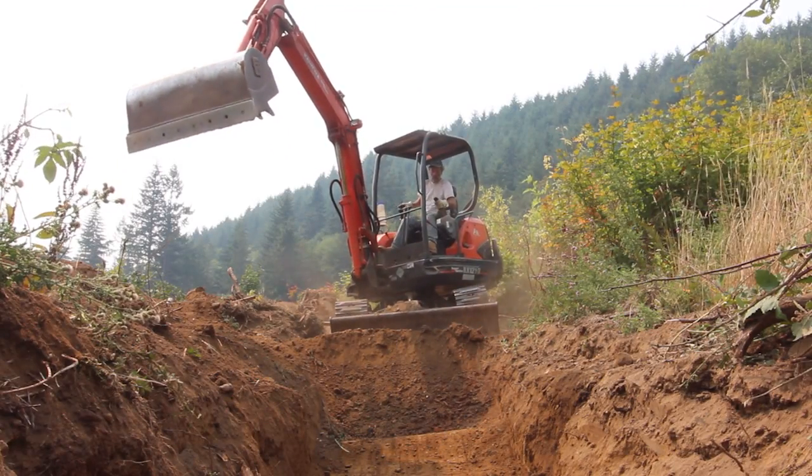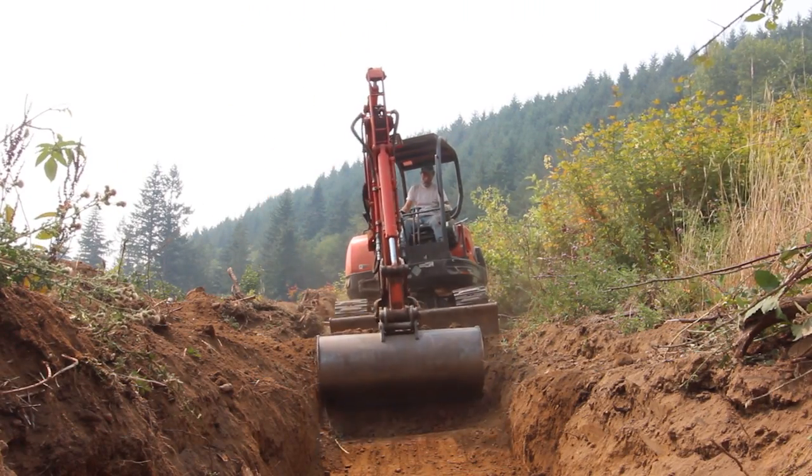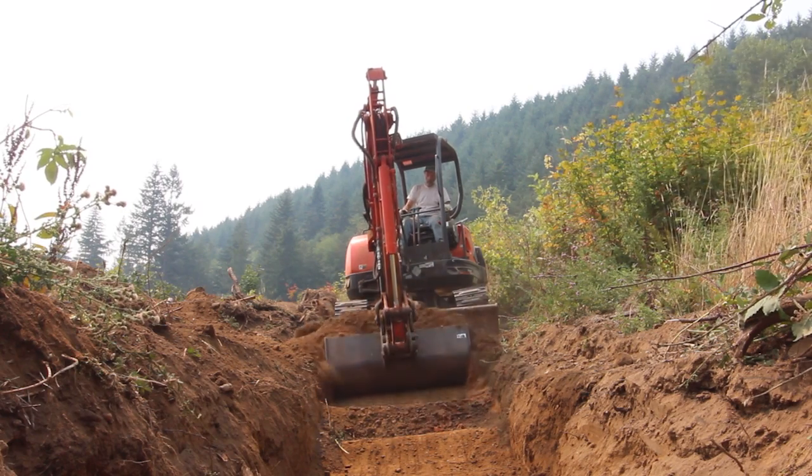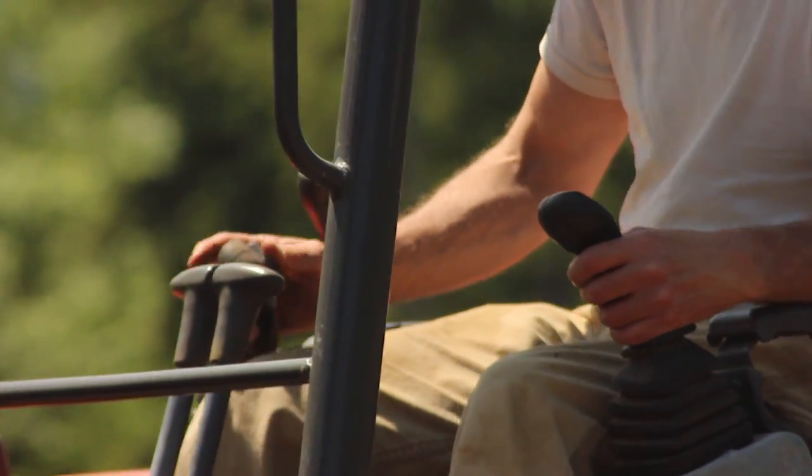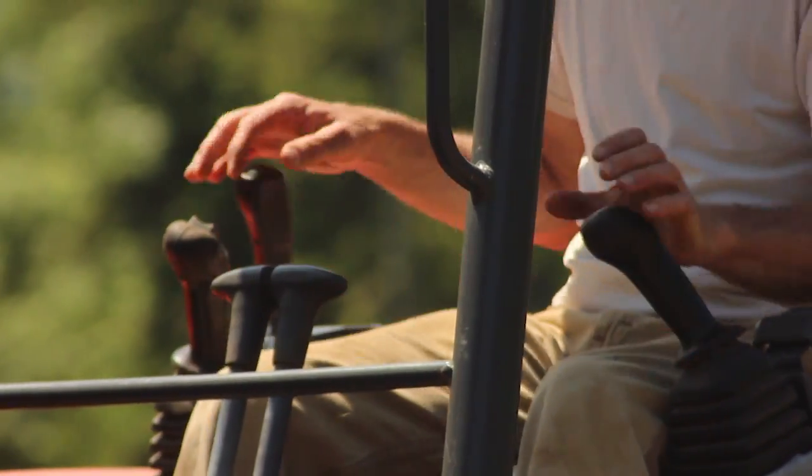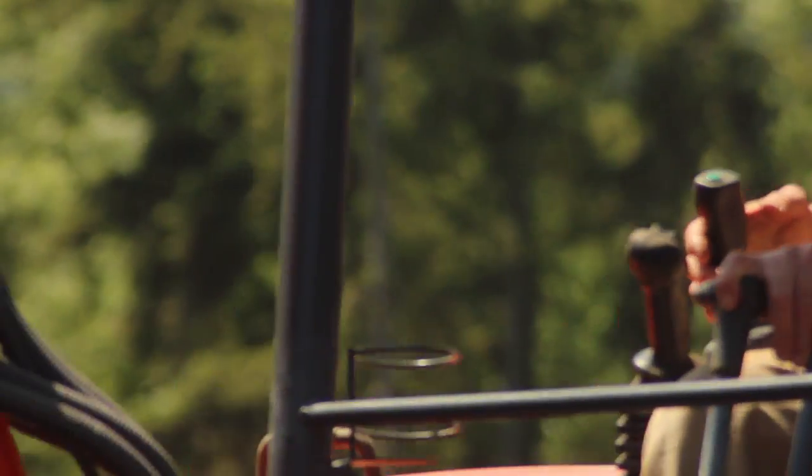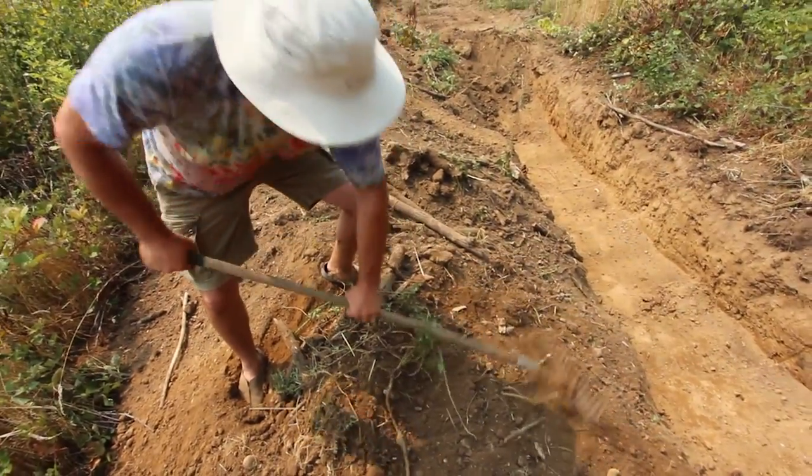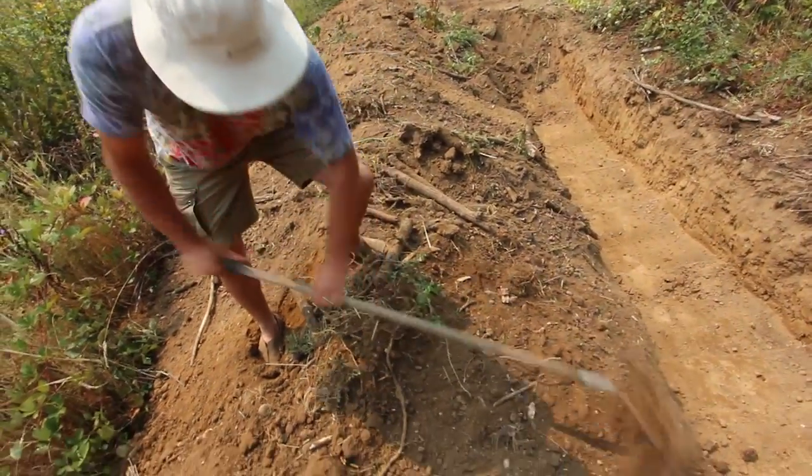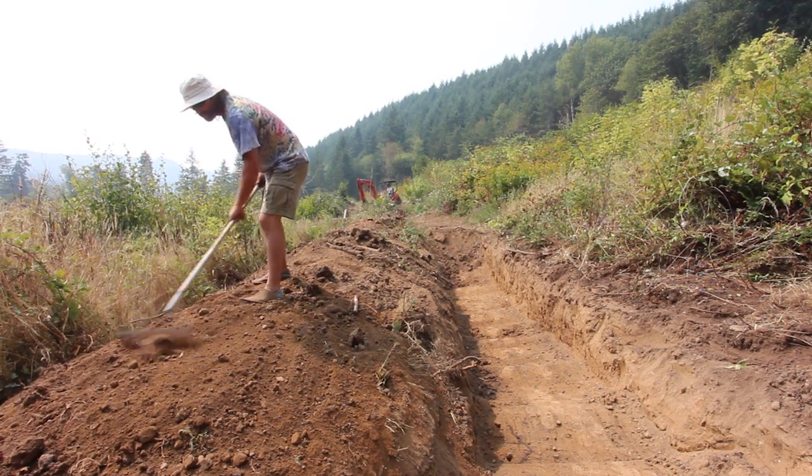Swales can be dug with a tilt bucket excavator, a bulldozer with a tilt blade, or a backhoe. This swale is being dug with a Kubota mini excavator 121 with push blade, a 10,000 pound machine. The swale is dug, then the berm on the downslope is raked smooth to prepare for planting.